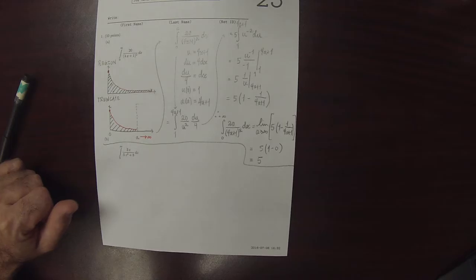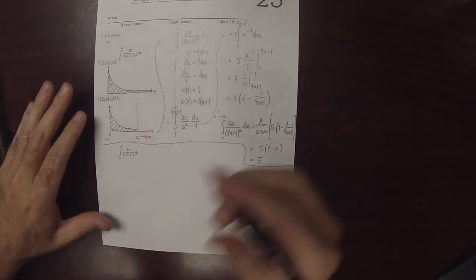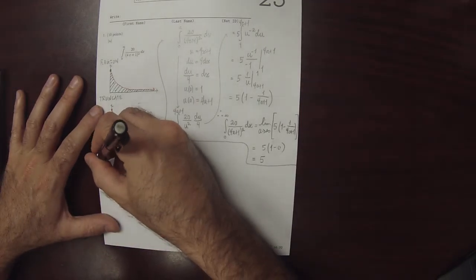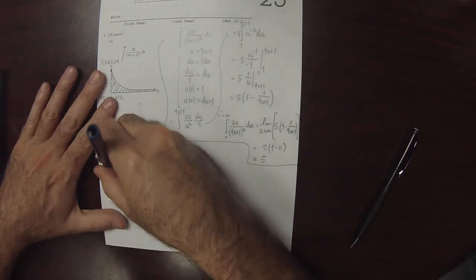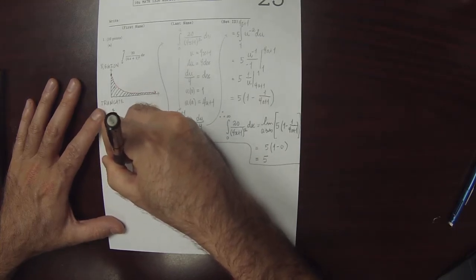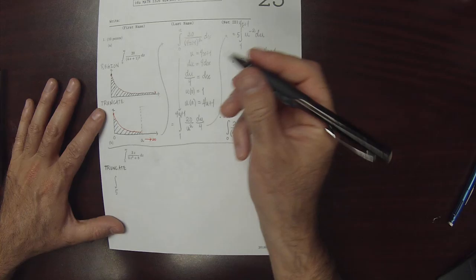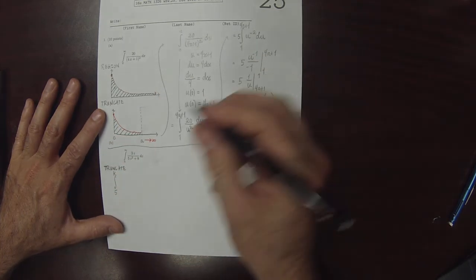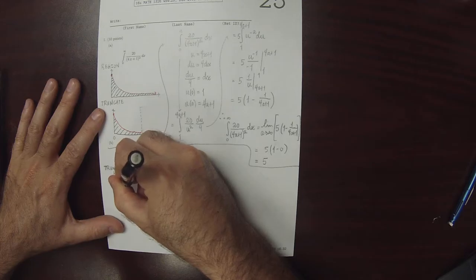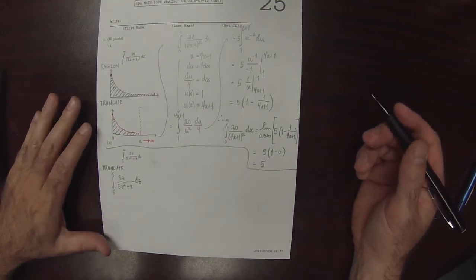For the next one, it's a very similar story with a similar-looking region, so we'll need to truncate it in the same way. This integral is improper; we cannot use the fundamental theorem. So we'll truncate. The integral from 5 to K of 3z over (5z squared plus 8) dz — now this is a proper integral, so we can use the fundamental theorem.